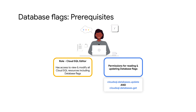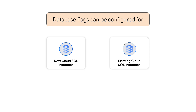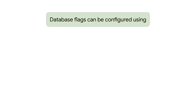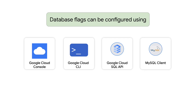To configure database flags you must have the Cloud SQL Editor role, which has the required permissions to access and modify all Cloud SQL resources including database flags. Database flags can be configured for a Cloud SQL instance when creating an instance, or for an existing instance by editing the configuration at any time. You can configure them using Google Cloud Console, CLI, or the SQL API.